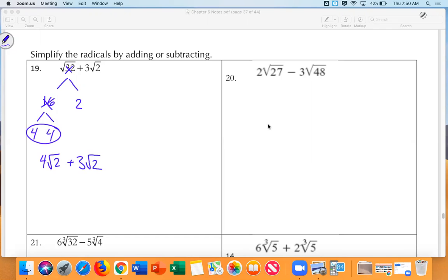So √32 would become 4√2 plus 3√2. Notice I just brought that down. And then Liam, just like fractions, we would just kind of add the numbers outside, kind of like adding the numerators. So 4 plus 3 is 7.